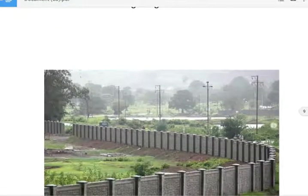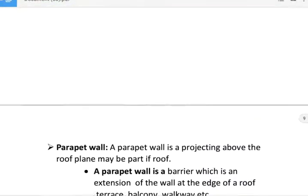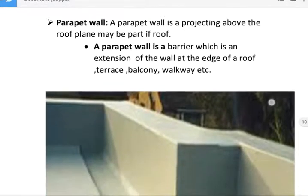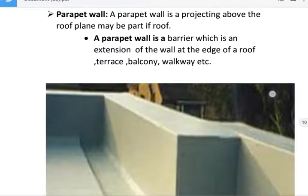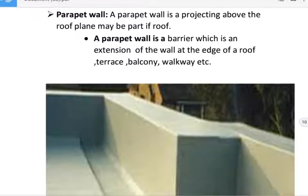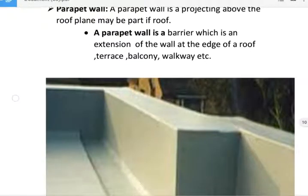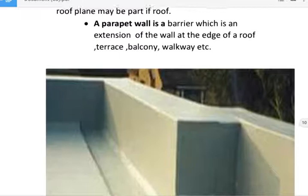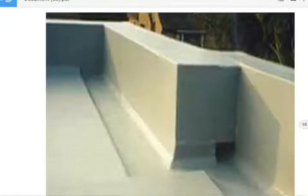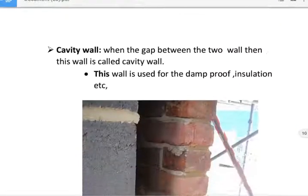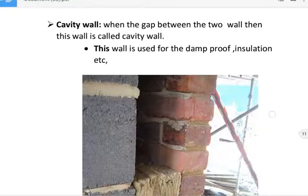Next, parapet wall. A parapet wall is a wall projecting above the roof plane. It may be part of a roof. A parapet wall is a barrier which is an extension of the wall at the edge of a roof, terrace, balcony, or walkway. Parapet wall is shown in figure.